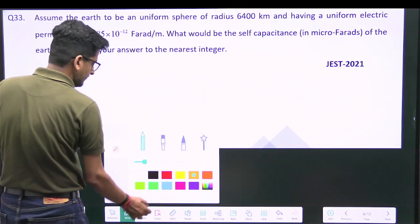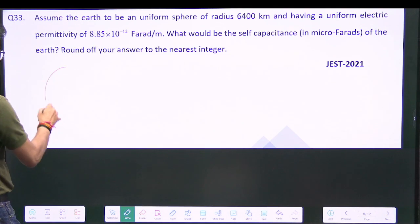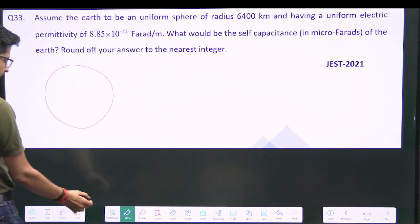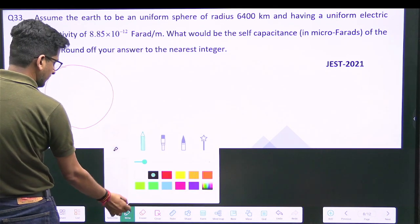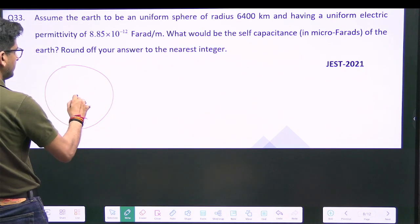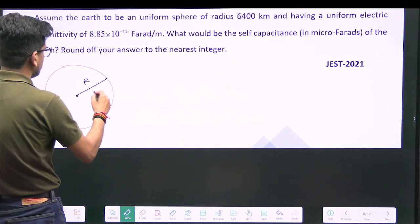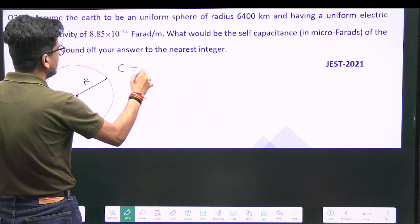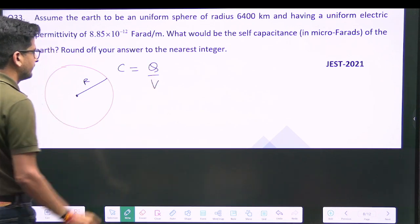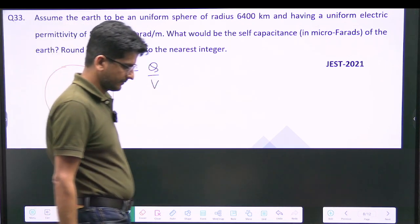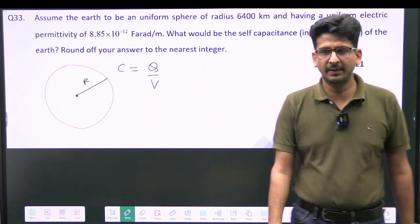So if you take a sphere like this and you take its radius to be R and suppose you want capacitance, so C is equal to Q by V. Okay, then what will happen?